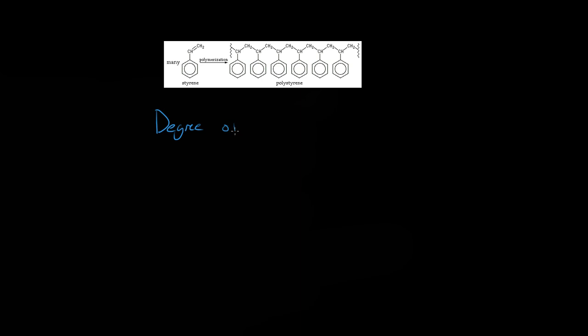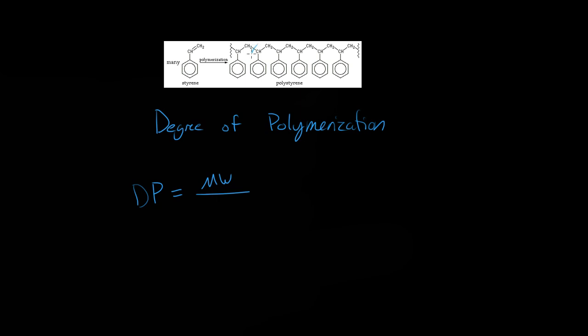This is a quick video on the degree of polymerization. What we want to find out is: what is the degree of polymerization? All it means is how many units of the monomer are in the polymer. To find it, we take the molecular weight of the polymer and divide that by the molecular weight of the individual repeat unit — in this case, 104 grams per mole.